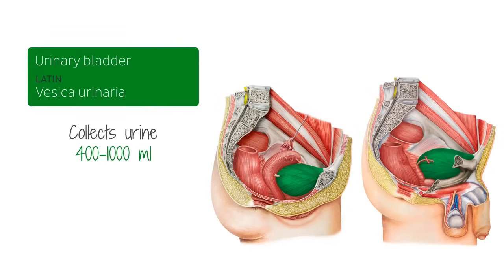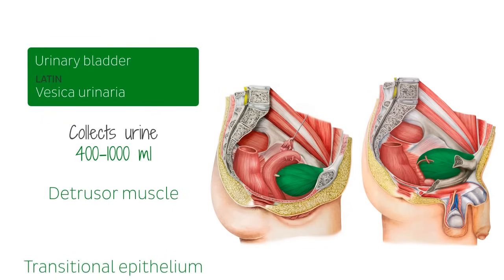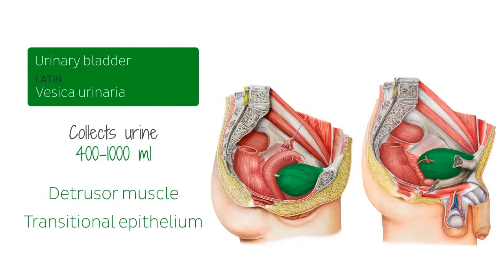That's roughly about the same volume as a can of soft drink. The walls of the bladder are composed of thick smooth muscle called detrusor muscle, and this muscle is lined with a transitional epithelium internally, which in the bladder is called urothelium. Urothelium also lines the ureters and is known for its high elasticity.